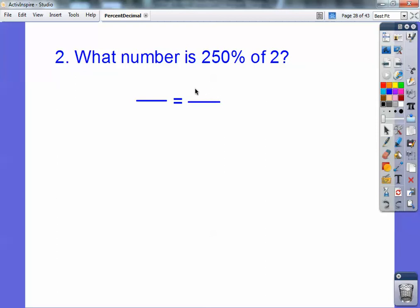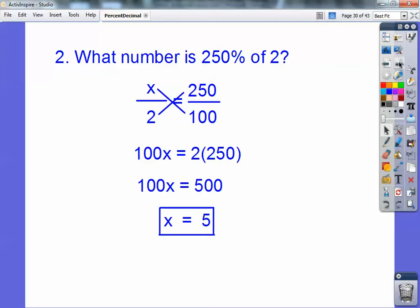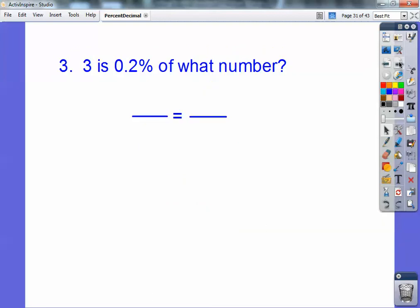And then look for the word 'of'. So 'of' is of 2, so 2 goes over here. And then my leftover piece must be my x. Everything else is filled in right there. And then you can go ahead and cross-multiply. So you get 100x equals 2 times 250, or 500, and 100 goes into 500 five times. See, these are easy.